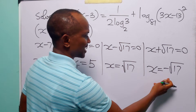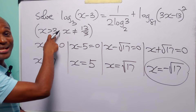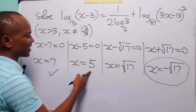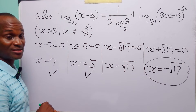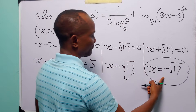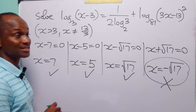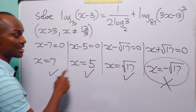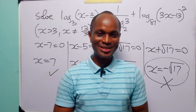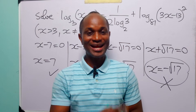Now, when you look at this last value, x equals minus root 17, it is negative. But according to our domain restriction, x must be greater than 3. The values x equals 7, x equals 5, and x equals root 17 are all greater than 3 and not equal to 13 over 3, so they are acceptable. The value x equals minus root 17 is less than 3, so it is unacceptable. Therefore, the three solutions are x equals 7, x equals 5, and x equals root 17. Thanks for watching!